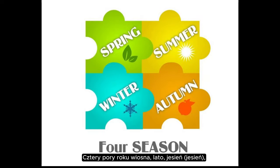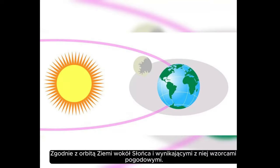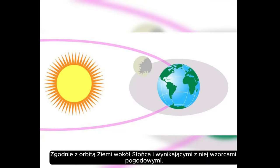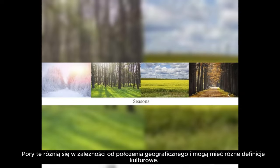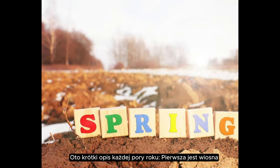The four seasons of the year — spring, summer, autumn, and winter — divide the year into four distinct periods based on the Earth's orbit around the sun and resulting weather patterns. These seasons vary depending on geographic location and can have different cultural definitions. Here's a brief description of each season.